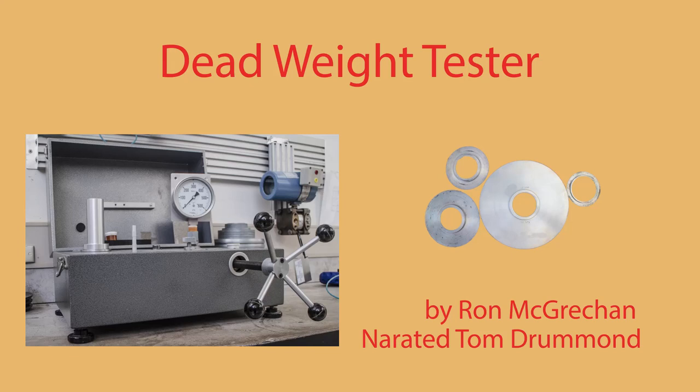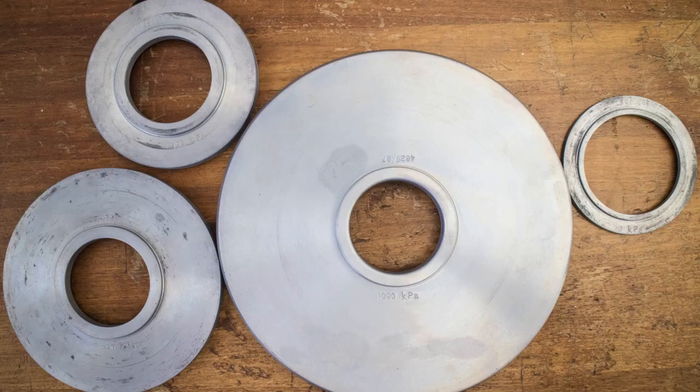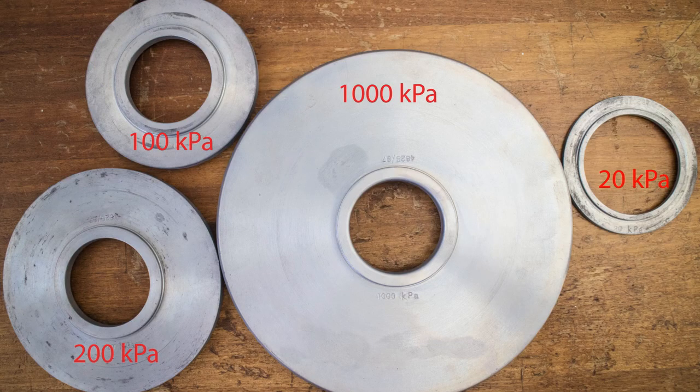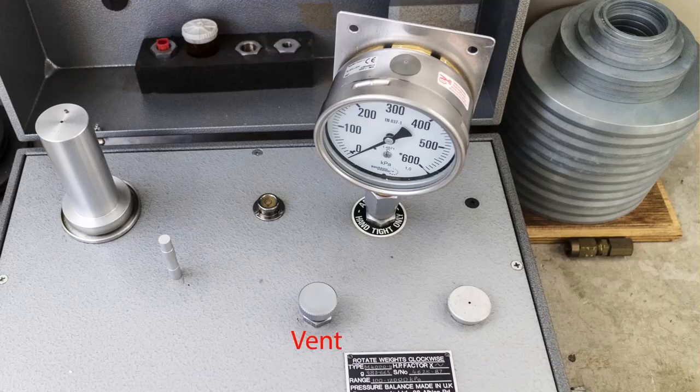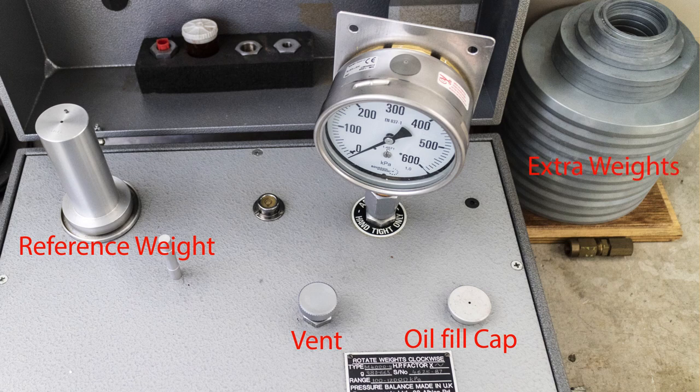Pressure measurement using a dead weight tester. The dead weight tester uses known weights and gravity as a reference to test pressure measuring devices. In this video, a pressure gauge is calibrated from 100 kPa to 600 kPa.